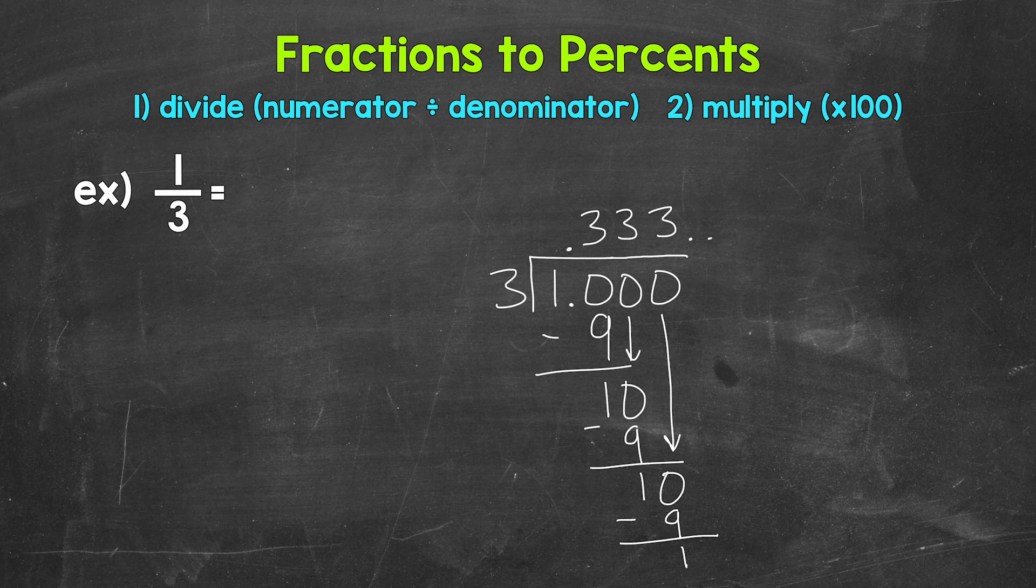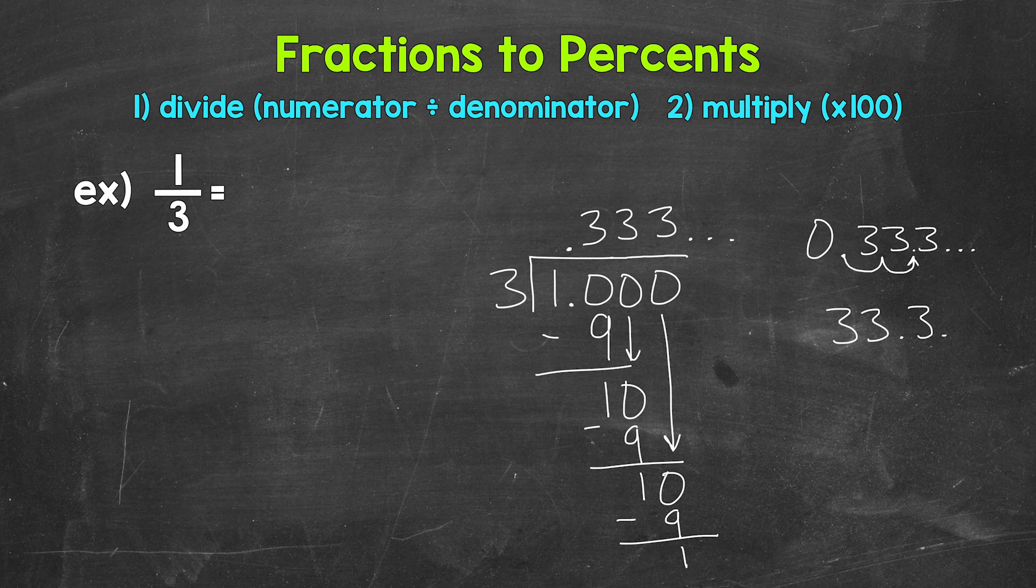So again, this is going to go on forever and give us a repeating decimal. Those 3's will never end. So we can stop there and convert this decimal to a percent now by multiplying it by 100. And again, we can multiply by 100 by moving the decimal twice to the right. So let's rewrite the decimal off to the side here. So 0.3 repeating and move the decimal once, twice to the right. That gives us 33.3 repeating percent.